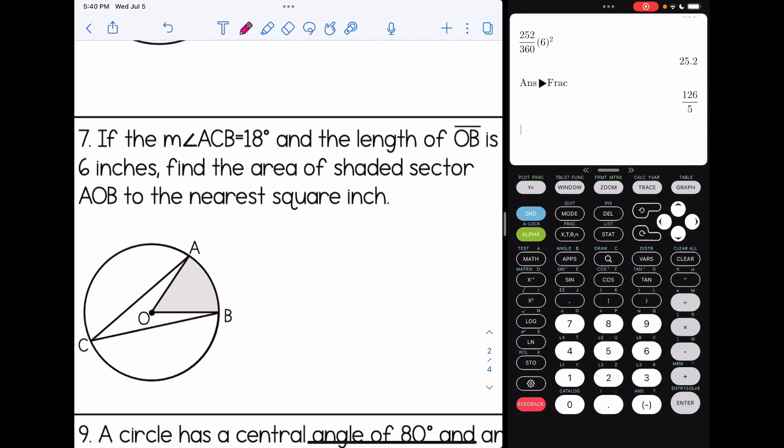All right, a few more. Number seven, if the measure of angle ACB is 18 degrees, I'm going to put that in my picture here, and the length of OB is 6, so that's our radius, 6 inches, find the area of the shaded sector AOB to the nearest square inch. So in order to answer this, I need to know my rules about inscribed angles and central angles. So an inscribed angle is always half the measure of the intercepted arc, so I know that this angle of 18 degrees will mean that this arc is 36 degrees. Now a central angle is always equal to the intercepted arc, so now I know the central angle is 36.